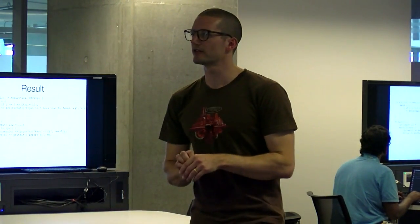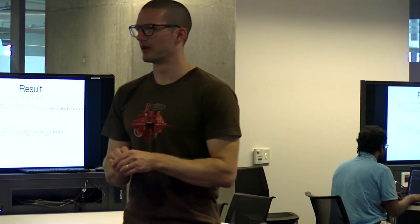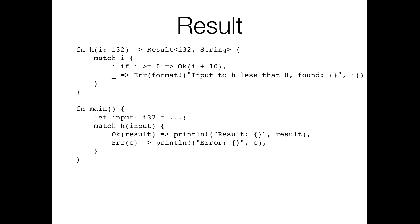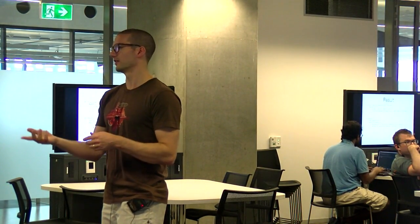Question: is there any significance to the exclamation mark? Yes — an exclamation mark means this is a macro usage rather than a function call. println! is a macro, not a function, and whenever you use a macro you have to use an exclamation mark. The reason is that there are things a macro can do that a function call can't — for example, a macro can hide a return. So it's to make it clear when you're reading that the invariants around what you can assume this is going to do are different.